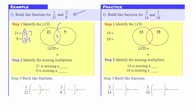21 also has a factor of 7, so I'm going to put that outside of the overlap. 9 has another factor of 3. Once I get these factors into the Venn diagram, all I have to do is multiply all of these factors together to find the least common denominator. So I'll take 7 times 3 times 3: 7 times 3 is 21, and 21 times 3 is 63. So the LCD for these two fractions is 63.